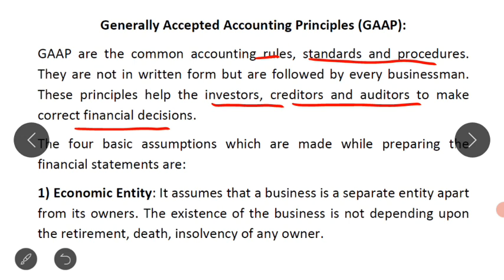These commonly accepted accounting rules, accounting standards and accounting procedures are known as Generally Accepted Accounting Principles. These are common accounting rules, standards and procedures — not in a written form — and this is the basic meaning of Generally Accepted Accounting Principles.